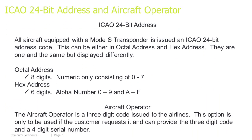ICAO 24-bit Address and Aircraft Operator. All aircraft equipped with a Mode-S transponder is issued an ICAO 24-bit address code. This can be either an octal address or hex address. They are one and the same, but displayed differently — meaning if you have an octal address, you can convert it into a hex address, and vice versa. Octal address: 8 digits, numeric only, consisting of 0–7.